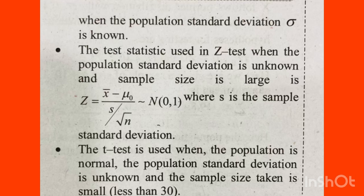Next we study the t-test. The t-test is used when the population is normal, the population standard deviation is unknown, and the sample size is small — that is, sample size less than 30. When these conditions are met, we use the t-test.